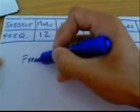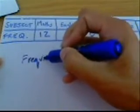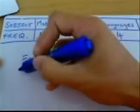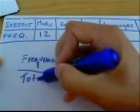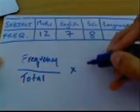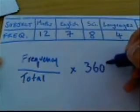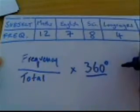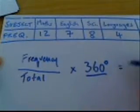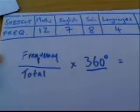We want to take the frequency for maths divided by the total number of students multiplied by 360 degrees. And that will give us an angle which we are going to translate to our pie chart.